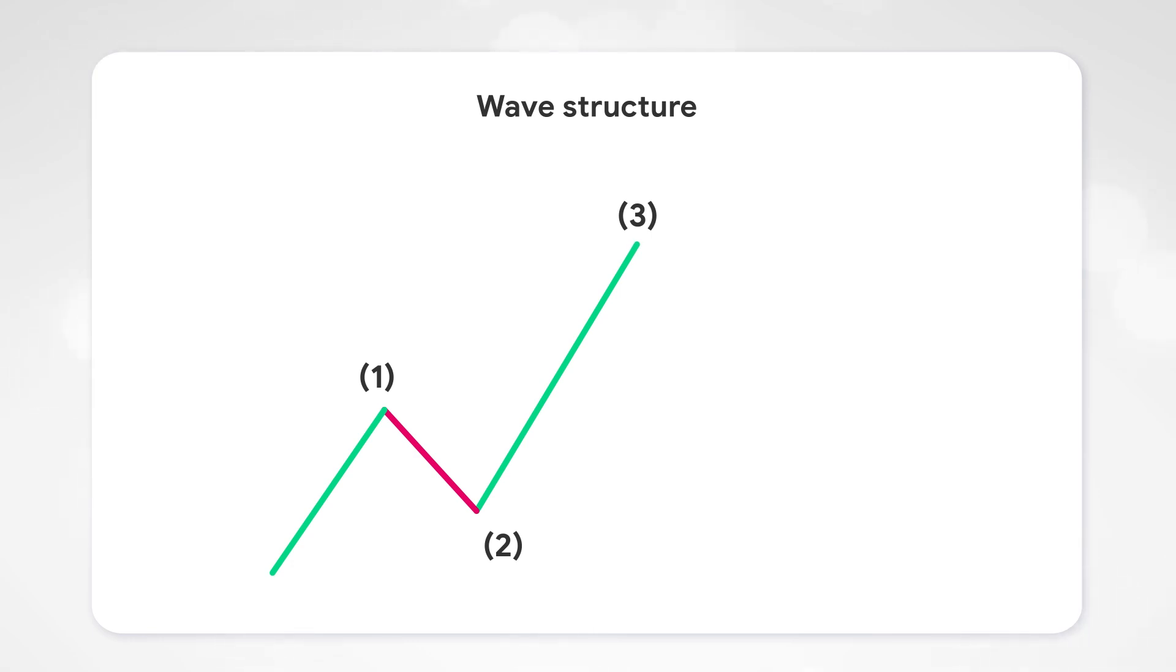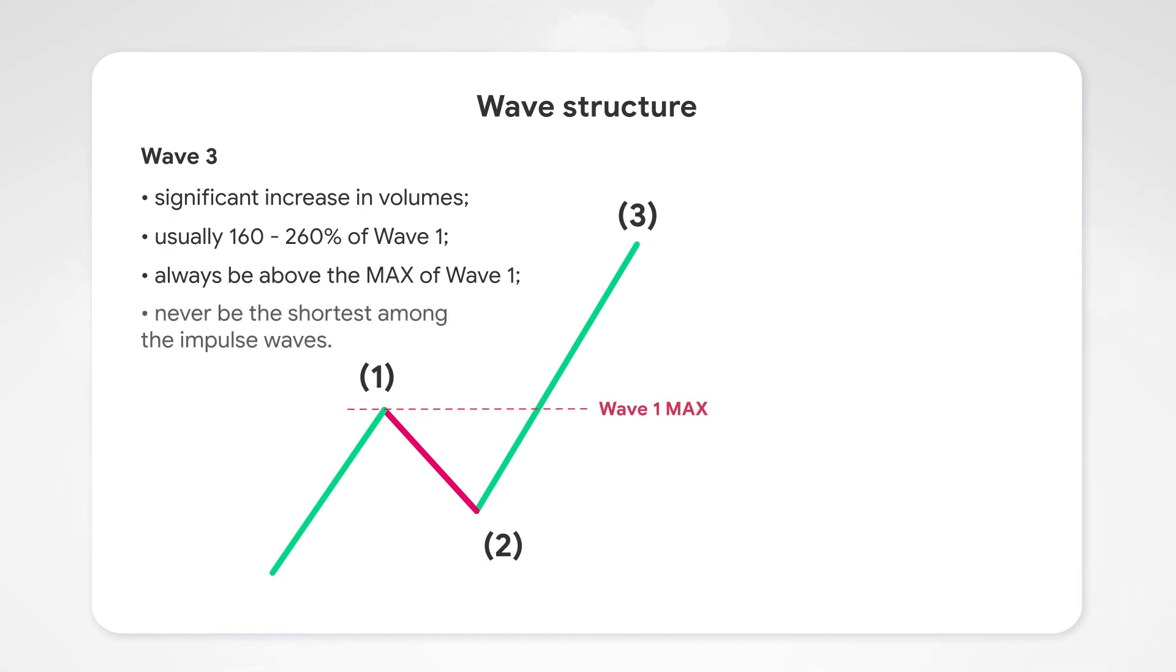Wave three is characterized by the entry of the bulk of traders into the market, a strong price growth, and significant increase in volumes. Usually, wave three is 160% to 260% or more of wave one's height. The end of wave three should always be above the maximum of wave one. Wave three can never be the shortest among the impulse waves.